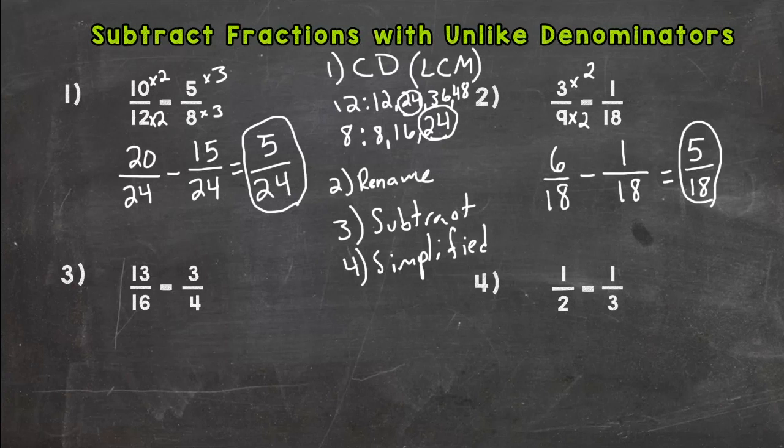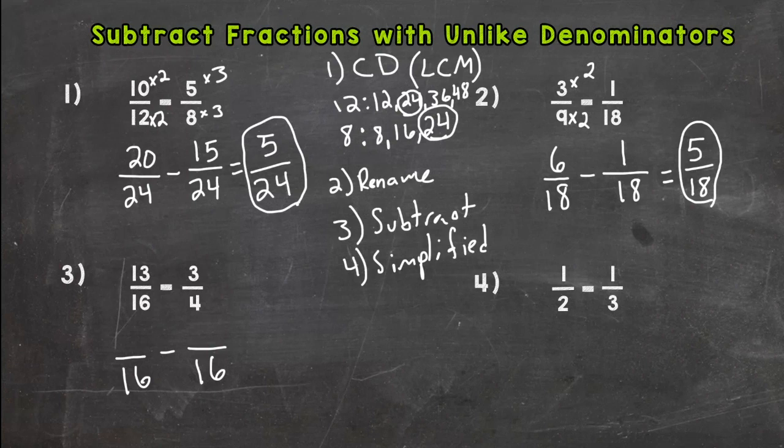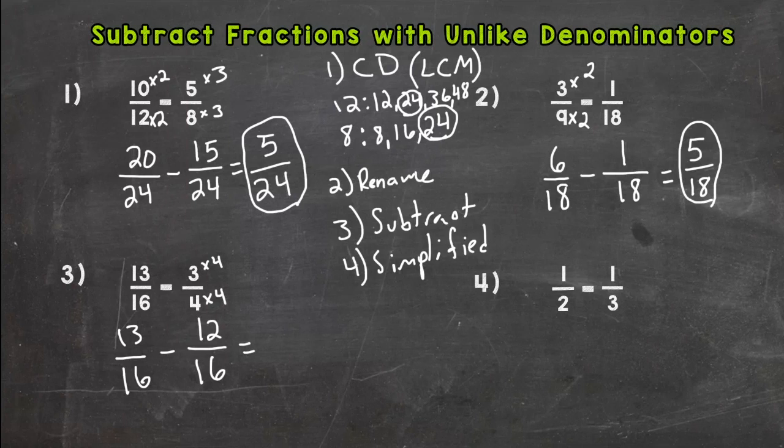Number 3: 13/16 minus 3/4. We need to think what our common denominator is. Where is 16 and 4 going to meet first? They are going to hit at 16. 13/16 already has a denominator of 16, so we are done there. For the second one, 4 times 4 is 16, so 3 times 4 is 12. 13 minus 12 is 1, keep our denominator the same. 1/16 can't break that fraction down anymore, only common factor is 1, so we are done. 1/16.